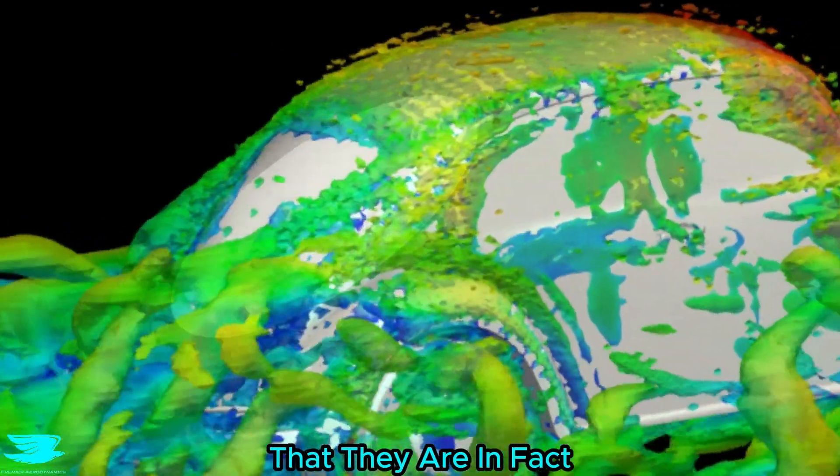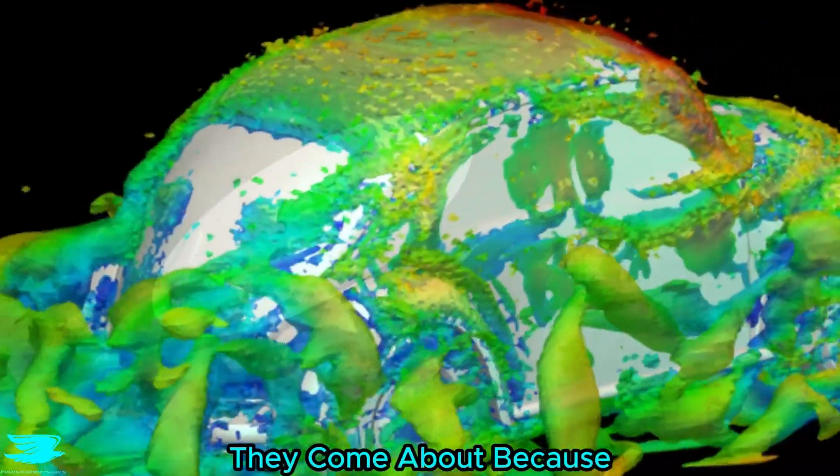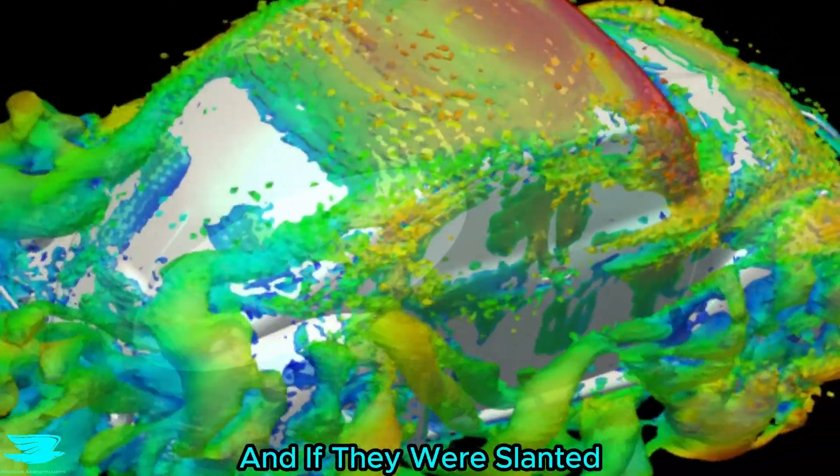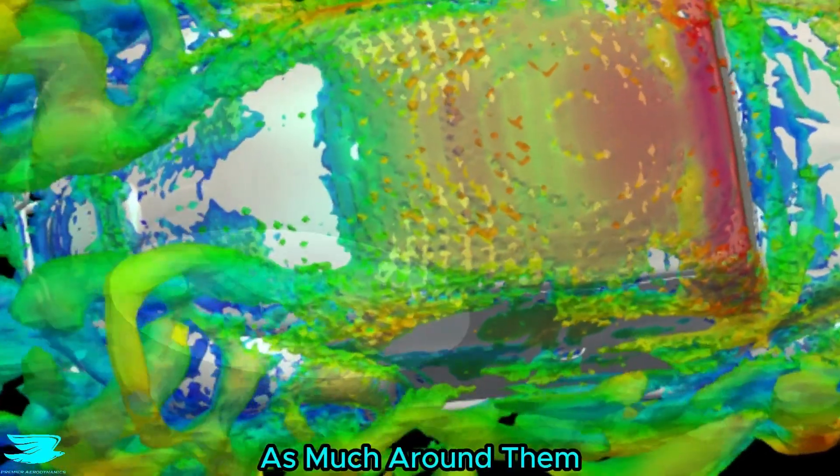And yes, we can see that they are in fact vortices from the C pillars. They come about because the C pillars are too upright, and if they were slanted more, the flow wouldn't roll up as much around them.